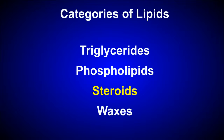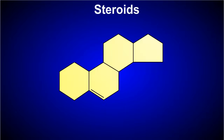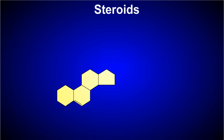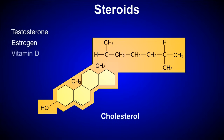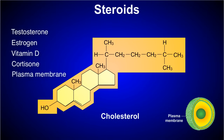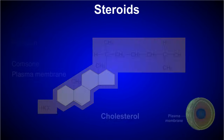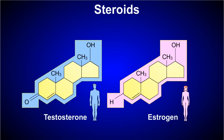Steroids are the next category of lipids. Steroids are composed of four fused rings of carbon to which different functional groups are attached. One well-known steroid molecule is cholesterol. Cholesterol serves as a precursor for the synthesis of other steroids such as testosterone, estrogen, vitamin D, and cortisone. Cholesterol is also present in plasma membranes, where it stabilizes the membrane. The hormones testosterone and estrogen have small differences in their functional groups but large differences in their effects on an organism.